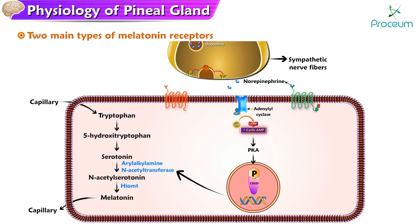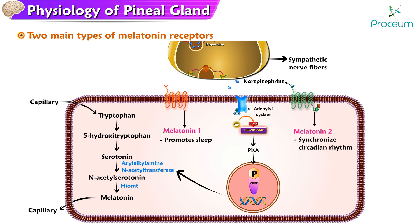There are two main types of melatonin receptors: melatonin-1 (MT1) and melatonin-2 (MT2). MT1 receptors promote sleep, while MT2 receptors help synchronize the circadian rhythm.